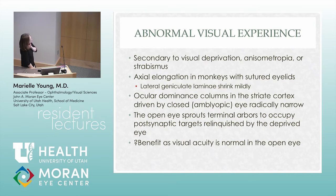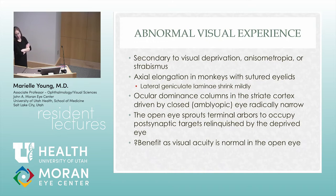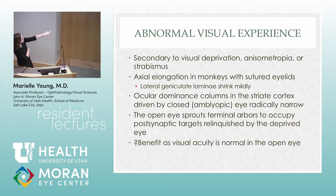You get abnormal visual experience and abnormal binocularity from visual deprivation to one or both eyes, anisometropia, or strabismus. In monkey studies, if you close one eye, the lateral geniculate nucleus shrinks on that side. This can even be seen in kids with amblyopia — a small cataract causing myopia in that eye suggests it's visually significant. The lateral geniculate nucleus will shrink on the side of decreased vision.